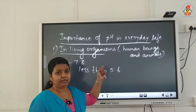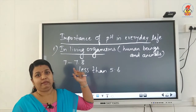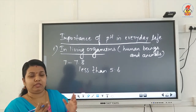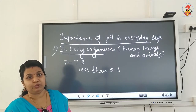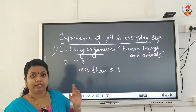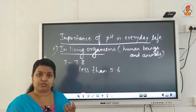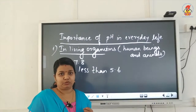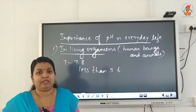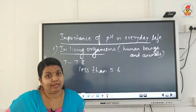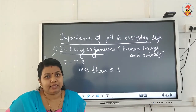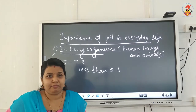So that is the first point — the importance of pH in living organisms. Please remember the pH value within which our body works is 7 to 7.8. Any large deviation from this normal value indicates a disease condition and has to be treated medically. For aquatic animals, if the pH value of river water falls below 5.6 due to acid rain, their life becomes a threat and survival will be difficult.